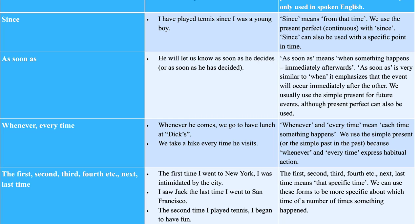Condition: if, unless, provided that — talk about a possible or counterfactual situation and its consequences. Example: 'If they lose weight during an illness, they soon regain it afterwards.' Purpose: in order to, so that, in order that, in case — indicate the purpose of an action. Example: 'They had to take some of his land so they could extend the churchyard.'